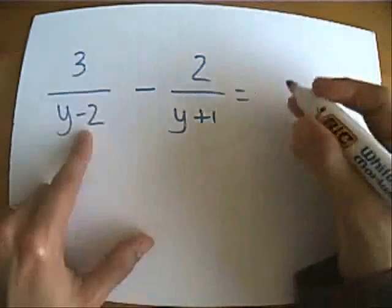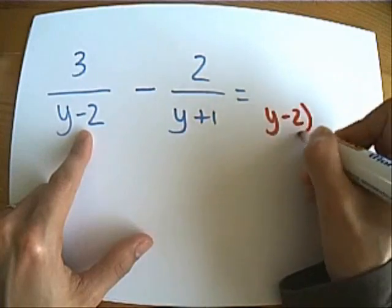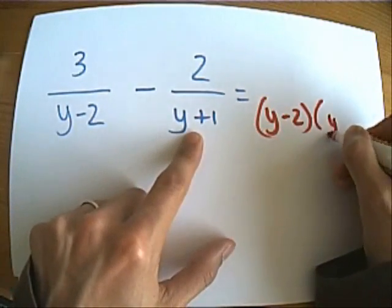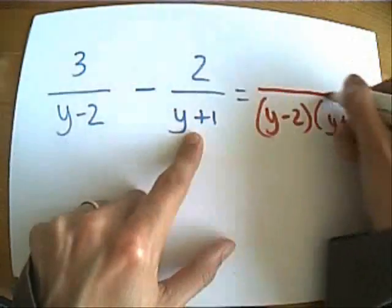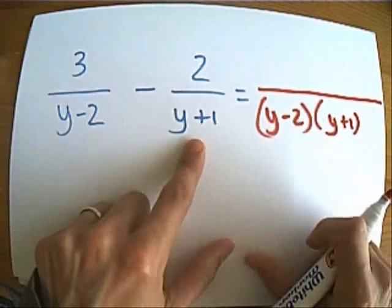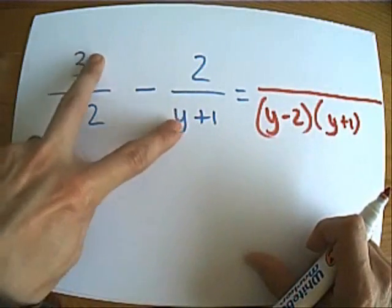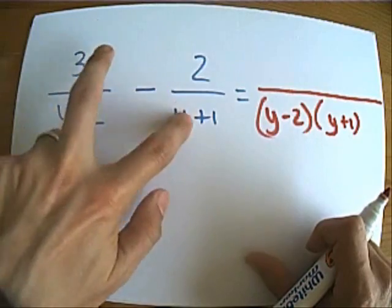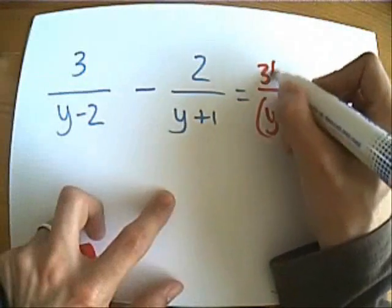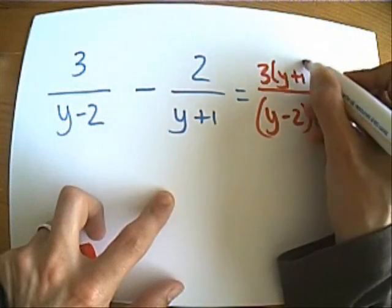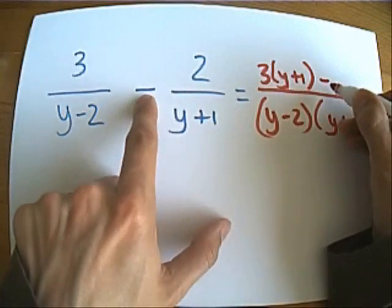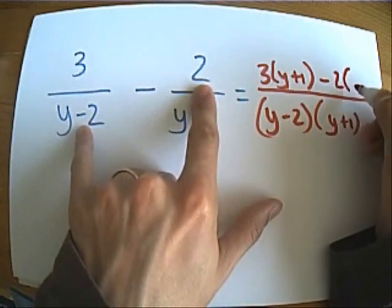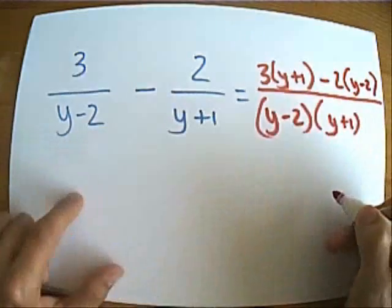First of all, what would my common denominator be? y minus 2 times y plus 1. I'm going to stick that on the bottom. Now what goes on the top? We're going to do my cross-multiplying. 3 times y plus 1, and I'm going to take away two lots of y minus 2.